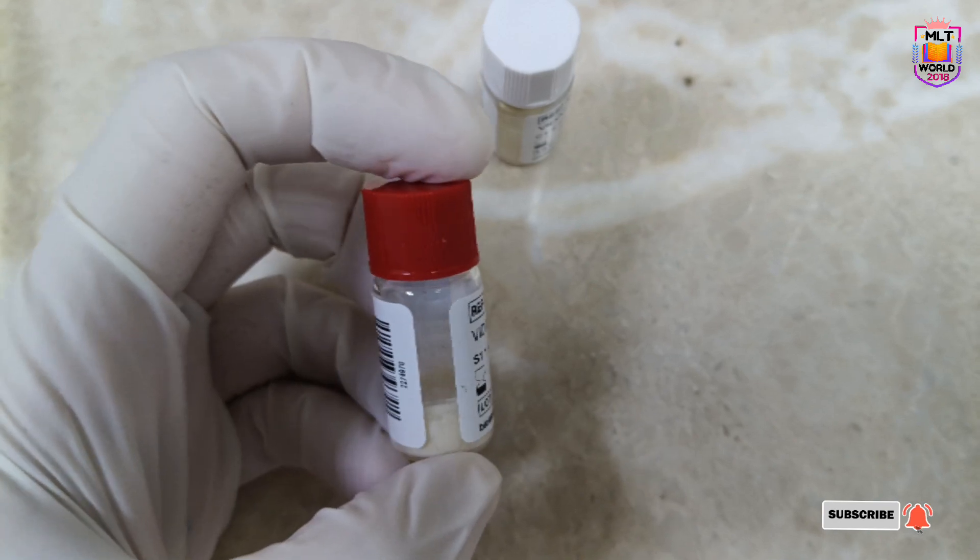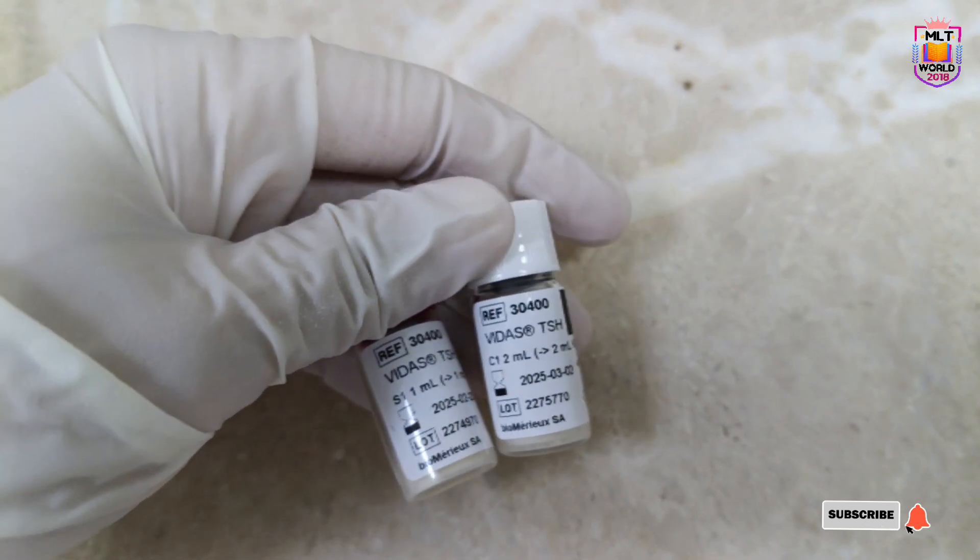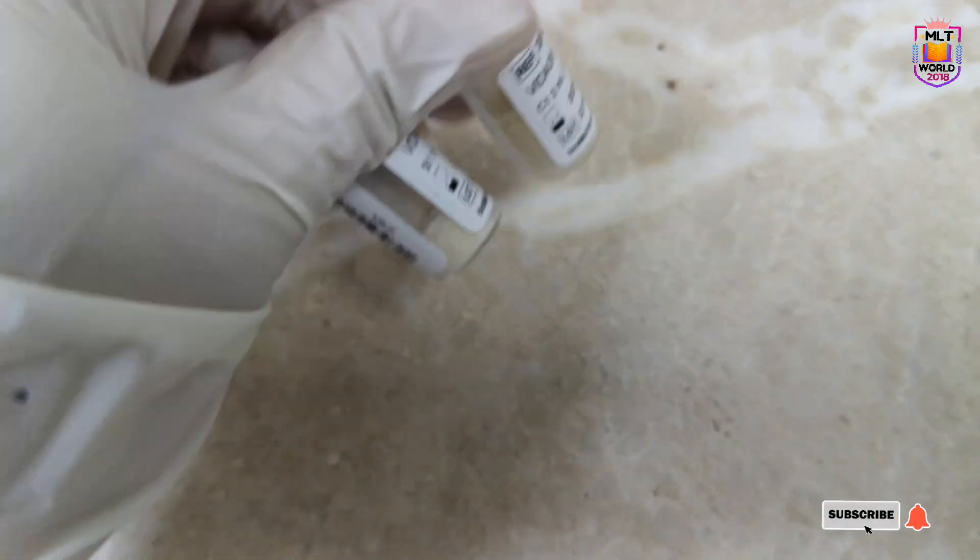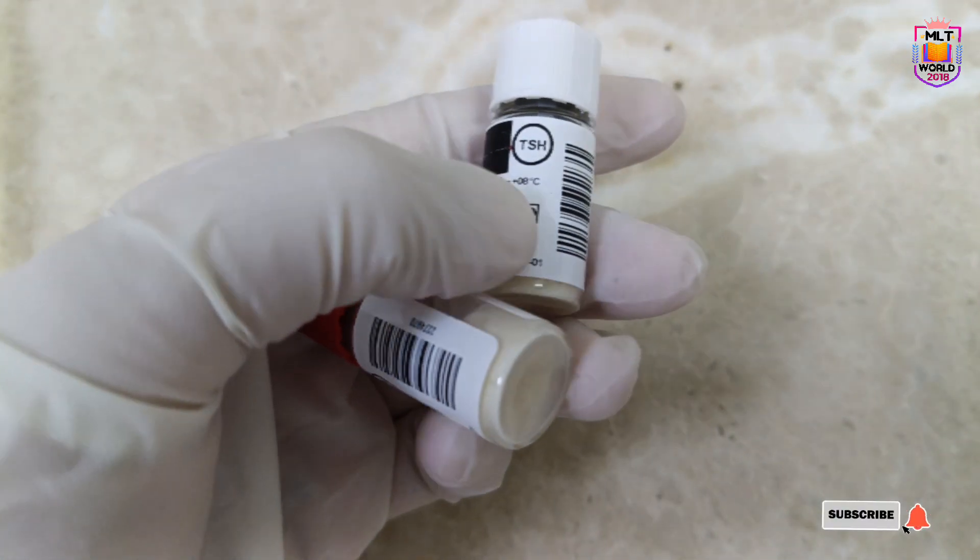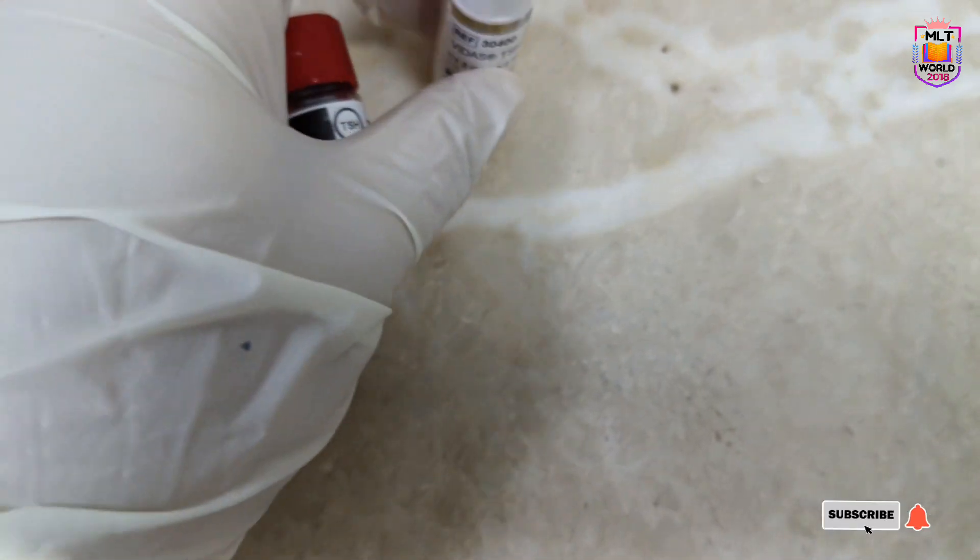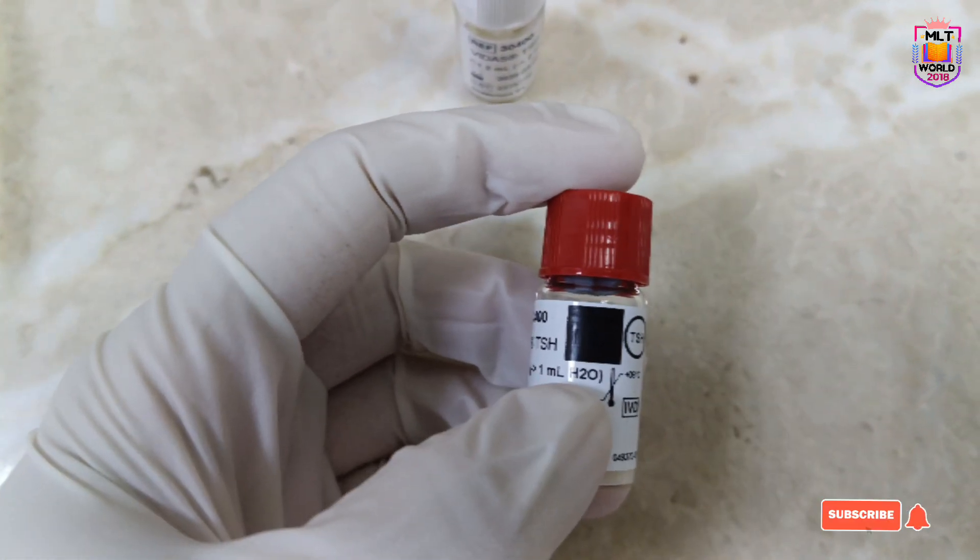First, check whether you need to dilute your control or calibrator with distilled water or with a diluent, because sometimes diluent comes with the kit. Then bring the control and calibrator to room temperature, and after that we will dilute with distilled water. Check how much water or diluent is needed for dilution.